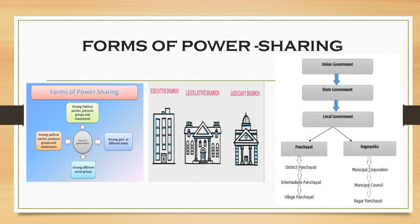In India, we refer to it as the central or the union government. In the union government, this basically consists of your Parliament — the Indian Parliament where there is Lok Sabha and Rajya Sabha, the two houses. Along with that, you have your President, your Prime Minister, your Council of Ministers, and Members of Parliament — all are a part of the union government.